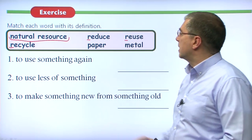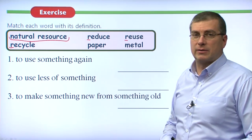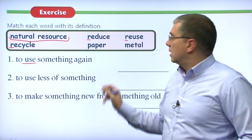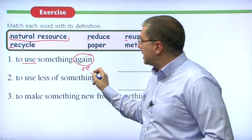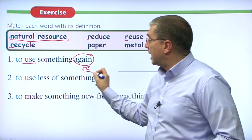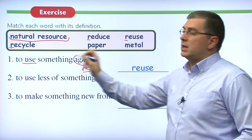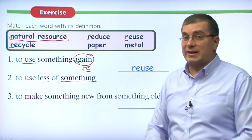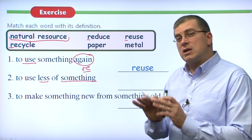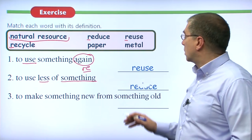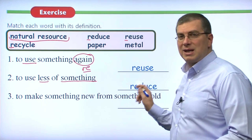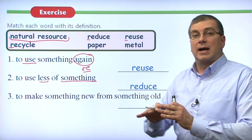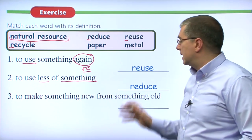To use something again — sometimes we use RE to mean again. We're using something again: reuse. Number two: to use less of something. We're not going to waste it; we're going to reduce. In this case, re doesn't mean again — reduce means to make something smaller, to not use as much, to reduce the amount. Number three: to make something new from something old — you're repeating the cycle, putting something back to the beginning of the cycle to make something new. What are you doing? You are recycling it.